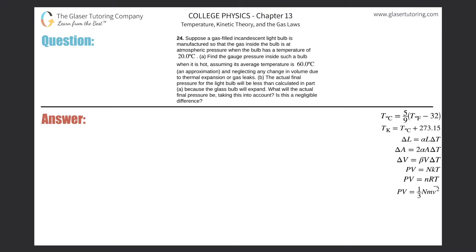Problem 24: A gas-filled incandescent light bulb is manufactured so that the gas inside is at atmospheric pressure when the bulb temperature is 20°C. Part A: Find the gauge pressure inside such a bulb when it is hot, assuming its average temperature is 60°C, neglecting any change in volume due to thermal expansion or gas leaks.